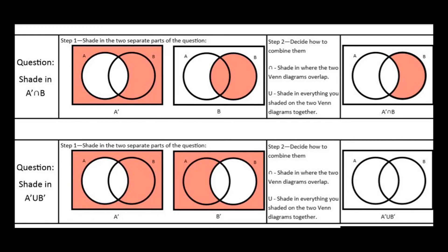anywhere that was shaded on the initial diagram will be shaded on the new diagram. Anywhere that was shaded on either of the first two initial diagrams will be shaded on the final diagram.